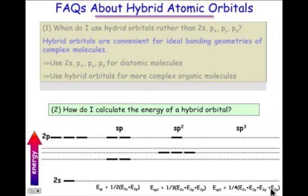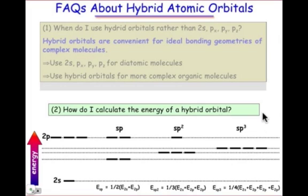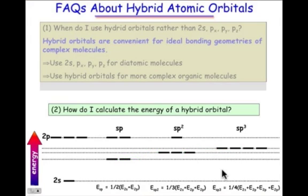Finally, for sp3, the weighted average is one part s and three parts p, so the four new hybrid orbitals are three-quarters of the way up from the 2s level. An important trend is that as we get more and more p character, the energy level rises — sp3 levels are higher in energy than sp levels.